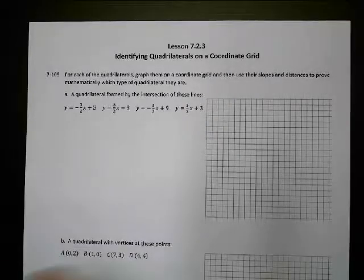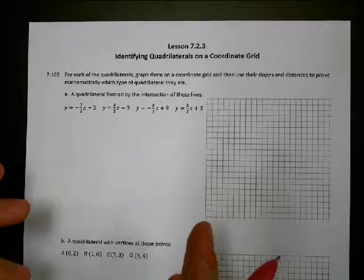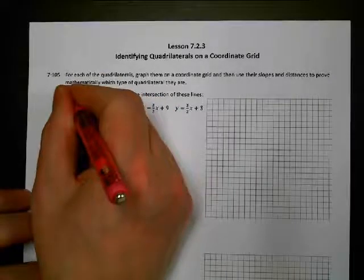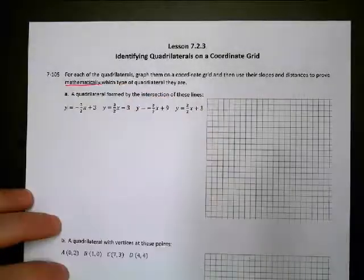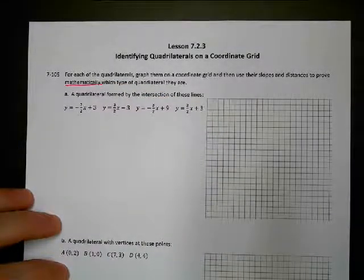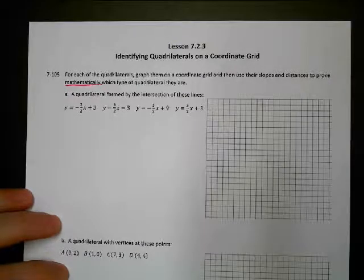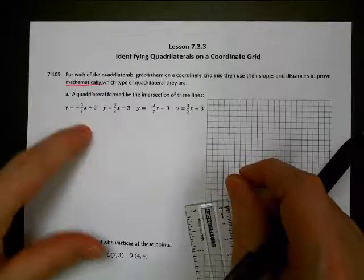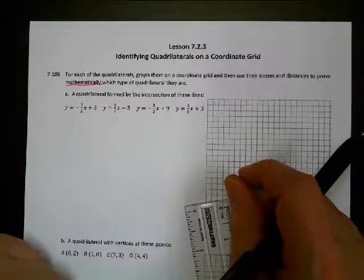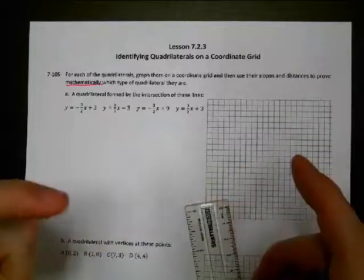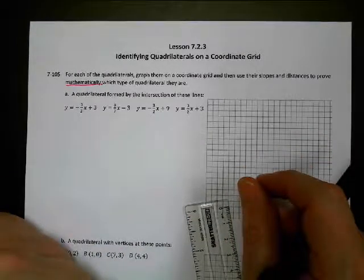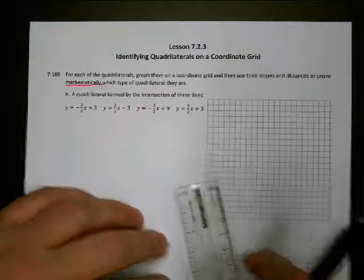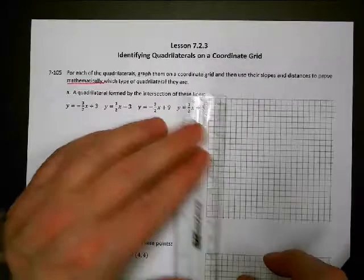So we're going to go ahead and make some quadrilaterals and then try to prove mathematically. That means we have to use math. You can't just look at it and go, I think it's this. You have to know for sure, mathematically. So first one, I've got three different linear equations here. They are going to create a quadrilateral. So let's go ahead and graph these three lines.